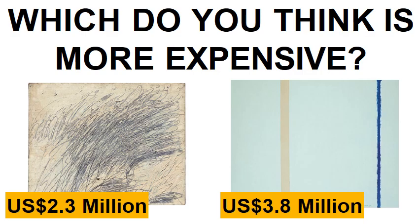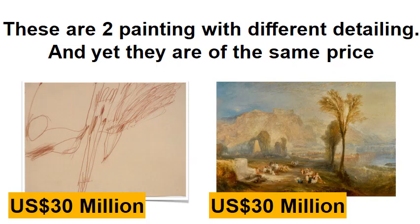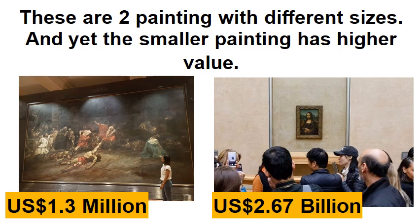Here are two paintings with very different levels of detail, and yet they are the same price — both at 30 million US dollars. Painting A appears to require lesser effort than painting B, so how is the pricing determined? And similarly, the Spolyarium is much larger than the Mona Lisa, and yet the Mona Lisa is still worth more. Why is that? What makes art valuable? This time, we are going to answer that.